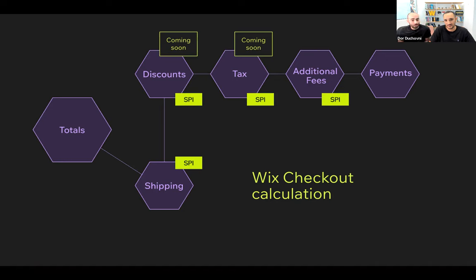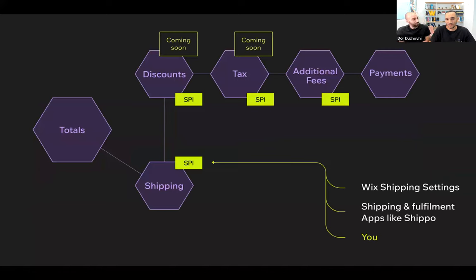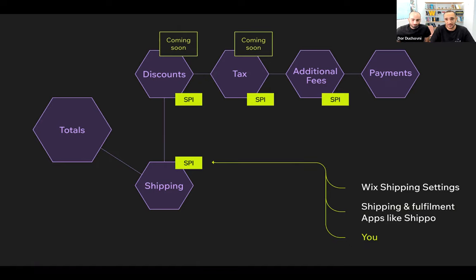Today, we are going to demonstrate two of them. First, we're going to talk about the shipping SPI. The shipping SPI is the ability — the call that Totals make to get all the shipping rates from different providers to checkout and present them. Our Wix shipping native settings solutions work with it.